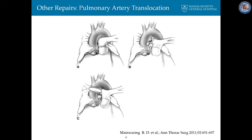Pulmonary artery translocation can also relieve compression from the left main coronary artery. The right pulmonary artery can be left in its usual location or in some situations brought in front of the aorta — the so-called Lecomte maneuver.